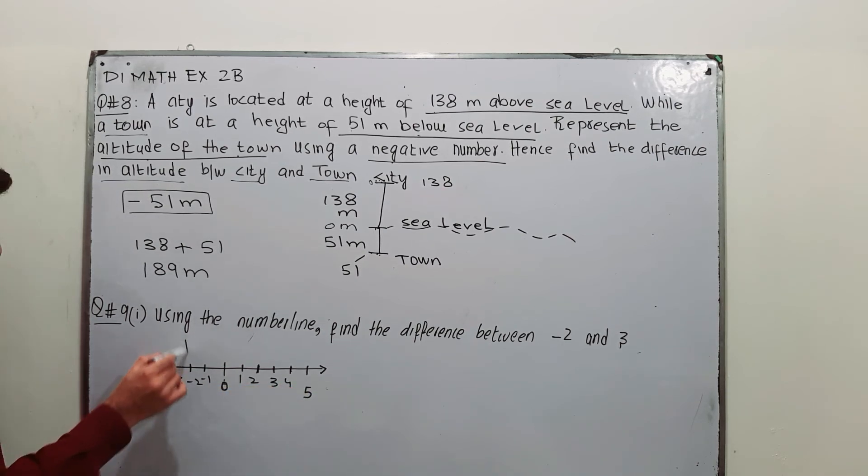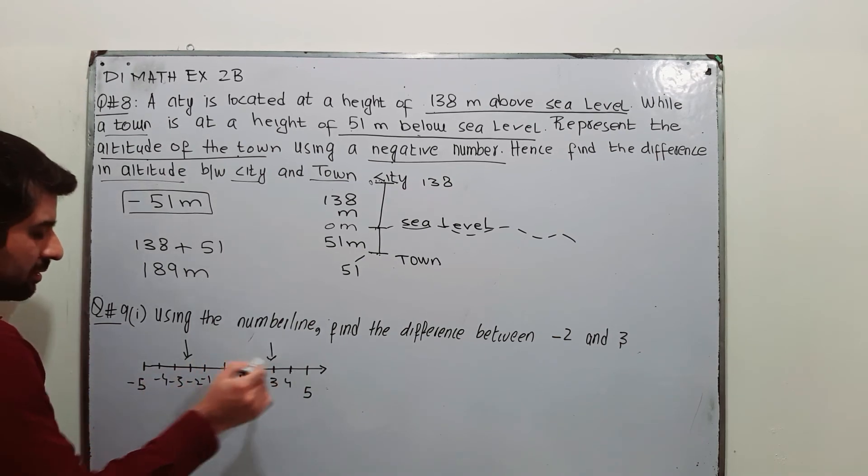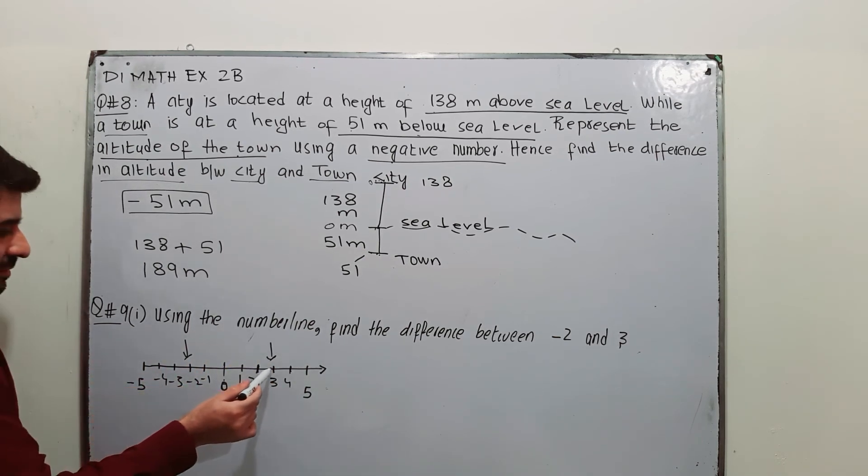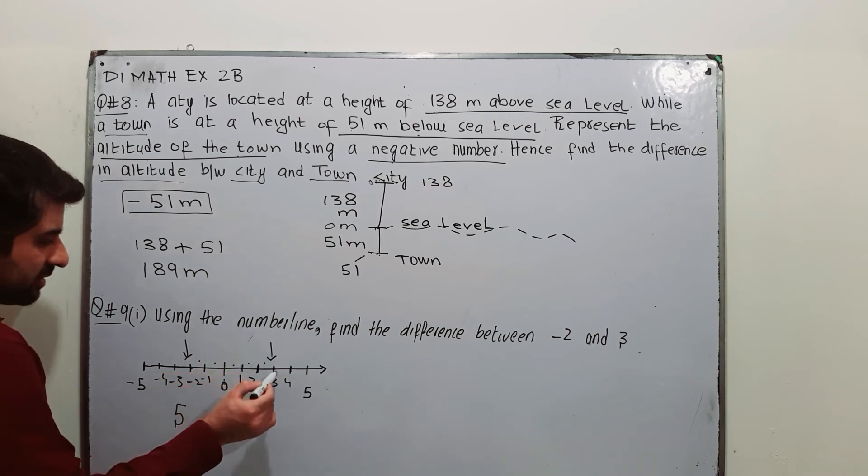Where is -2? Where is 3? The difference between them is 1 unit, 2 units, 3 units, 4 units, 5 units. The answer is 5.